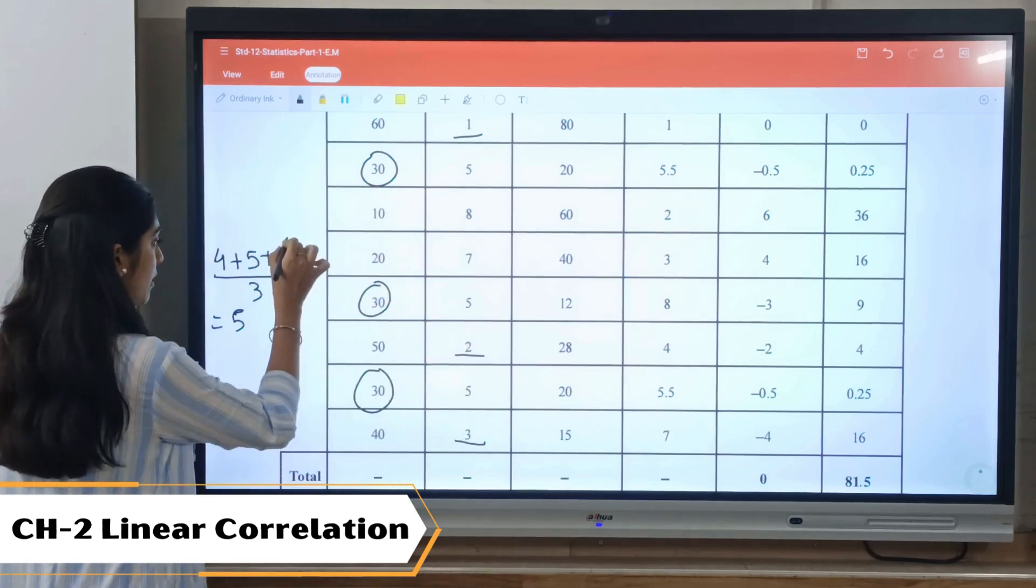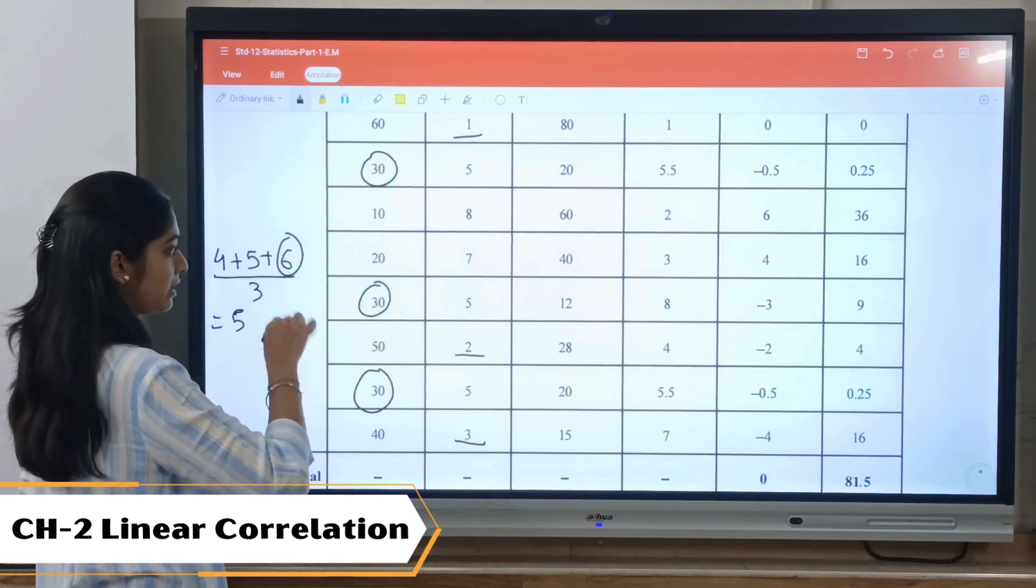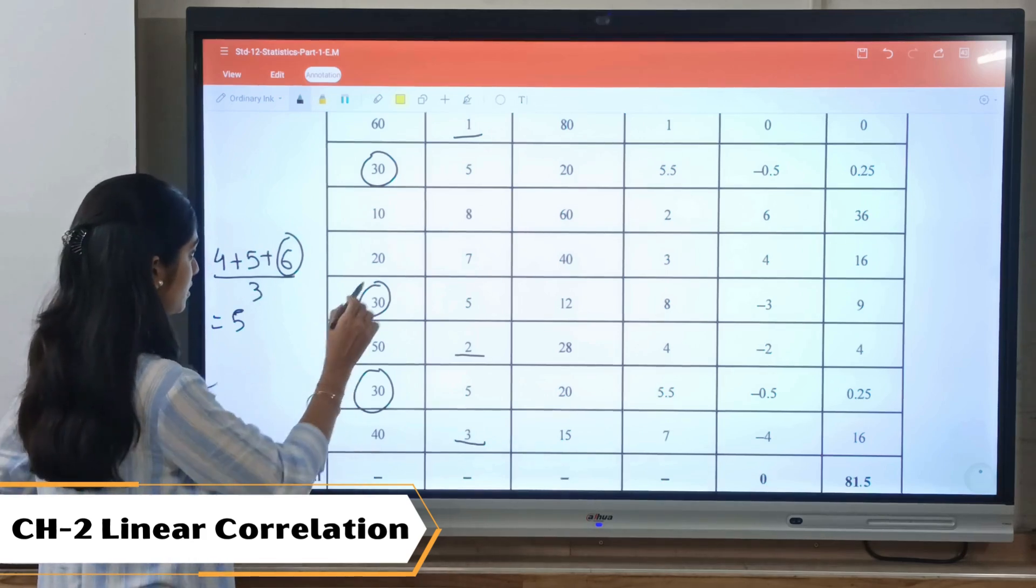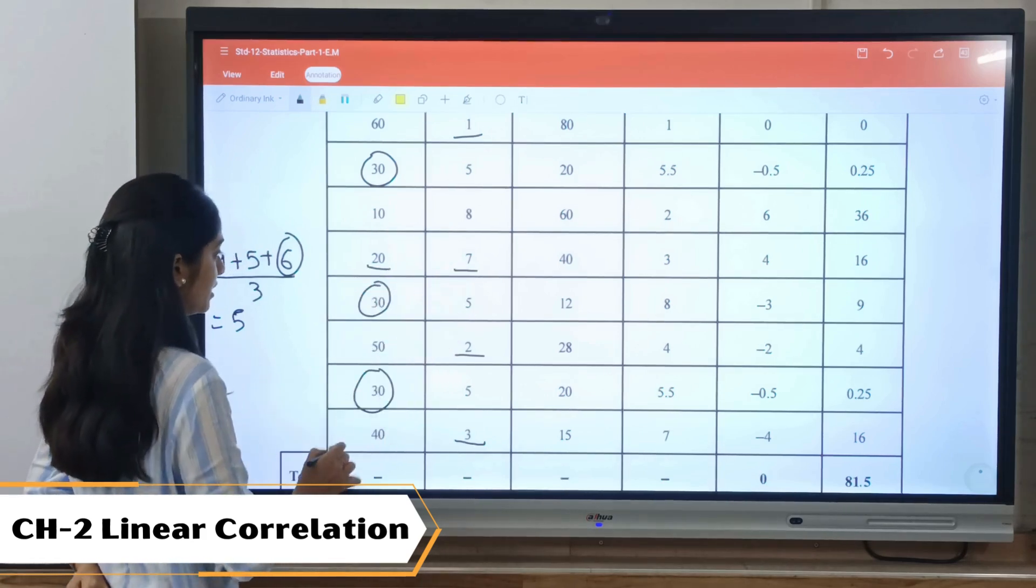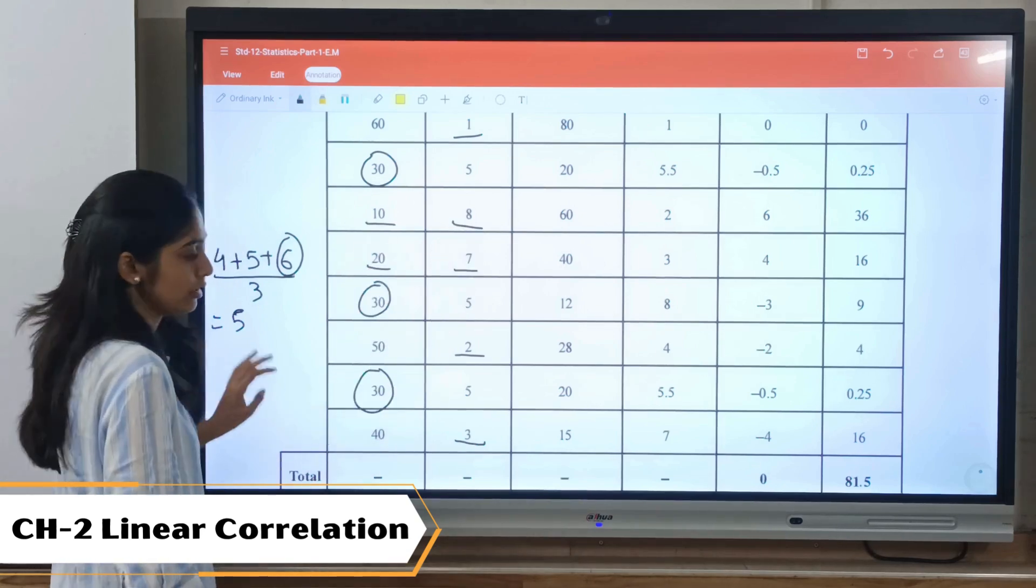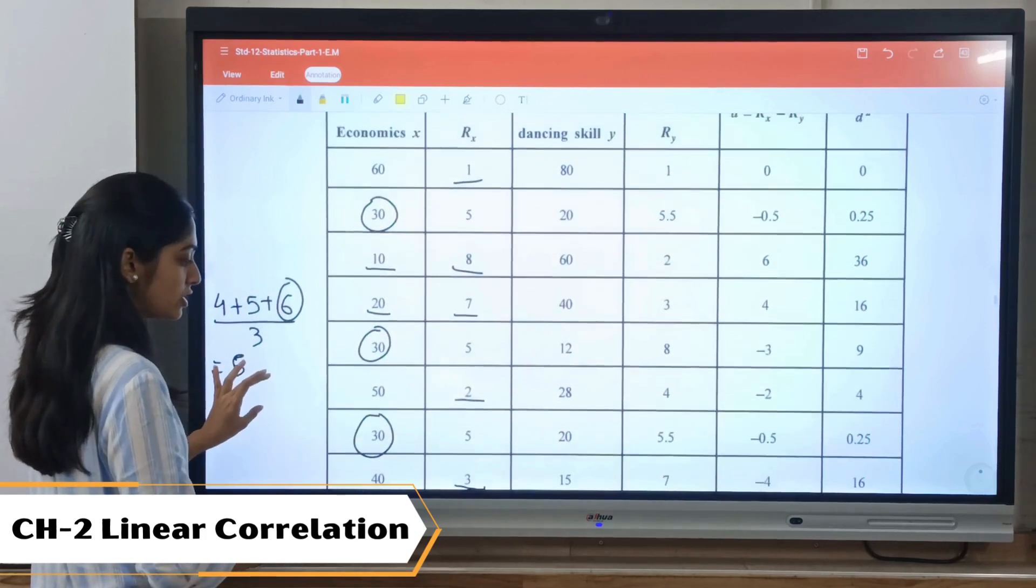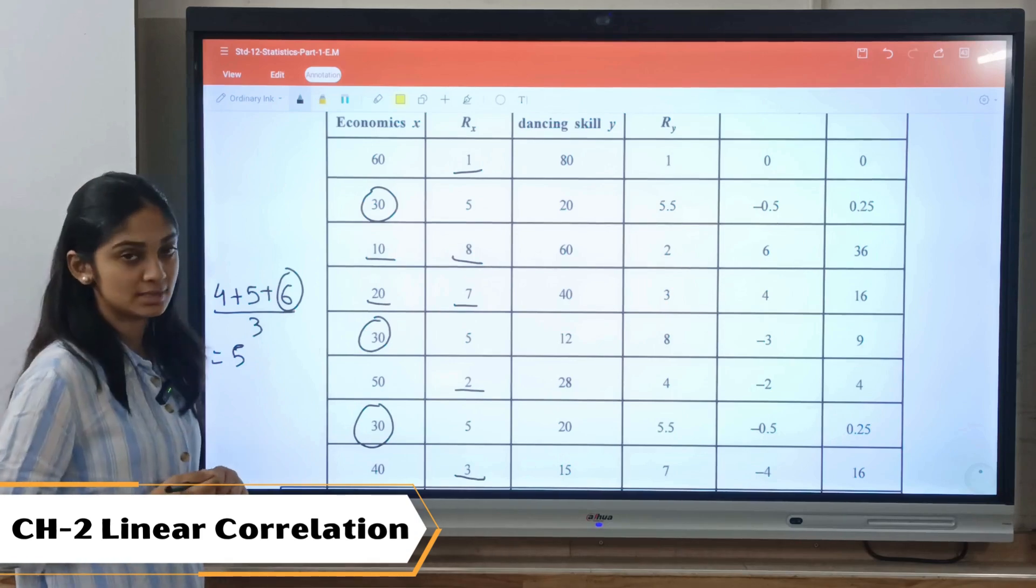Then, as we have assigned rank till six, we will be assigning the next seventh rank. After 30, we have 20, which will be given seventh rank. Then we have 10, which will be given eighth rank. So there are total eight observations, so eight ranks should be assigned.